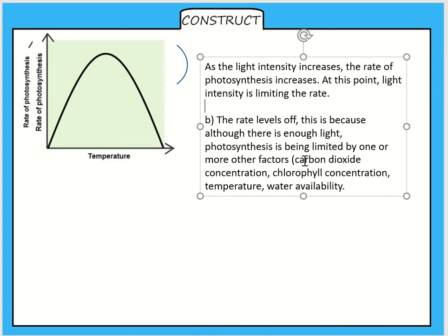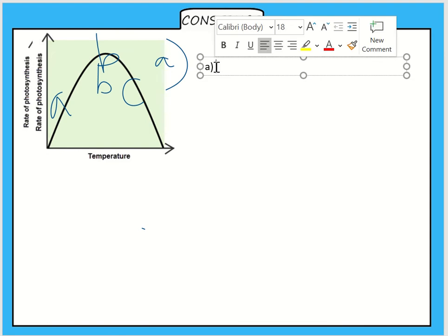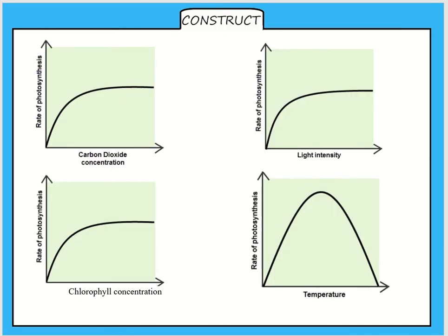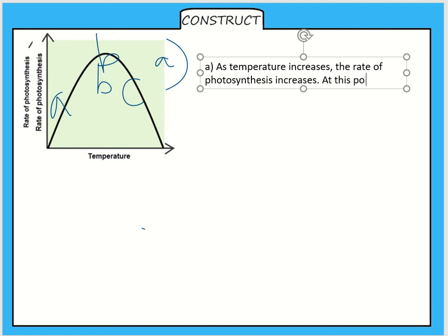I'm just going to go through the temperature graph because that's slightly different. On the temperature it's got three changes. It's got an A, a B and a C. The reason I know that it's got an A, a B and a C is because it changes shape three times. If I were asked to describe that graph I would be describing the pattern. I'd be saying the line goes up, it reaches a peak and then it goes down again. At A it's the same relationship in all of the graphs. At A you've got as temperature increases, the rate of photosynthesis increases. At this point the temperature is limiting the rate.